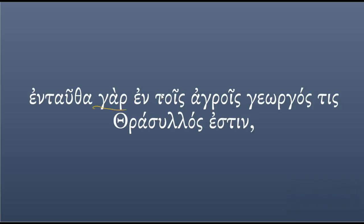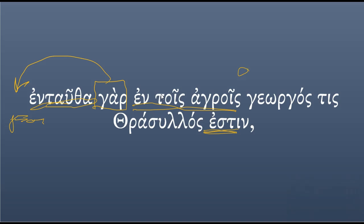Then we have another postpositive, 'γάρ,' and we move it up here — 'for.' 'For, in the fields' — 'ἐν τοῖς ἀγροῖς.' 'Γεωργός τις Θρασύλος ἐστίν.' 'There is' — and I think Rouse wants us to add 'a' here — 'there is a certain farmer.' That's probably what the 'τις' is doing: there is a farmer, a certain one. 'Θρασύλος' — all names in Greek mean something: Throselos means 'the bold plunderer.' So this man lives in the fields and his name is 'the bold plunderer.'